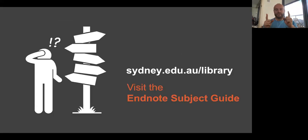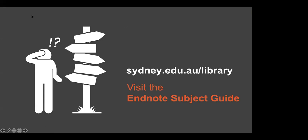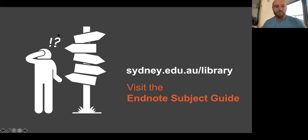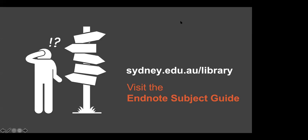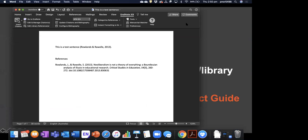That covers everything. Are there any questions before we wrap up? We've got a hand raised — go ahead, you can unmute if you'd like. The participant asks: if you have the same author who's published work in different years, EndNote wants to save it for the in-text citation as surname, first initial, and year. Is that right, and they couldn't change that function.